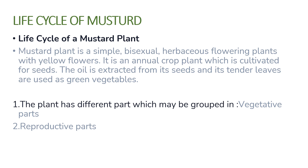The mustard plant is a simple bisexual plant. It is an annual crop plant cultivated for its seeds. Oil is extracted from its seeds, and its tender leaves are used as a green vegetable.